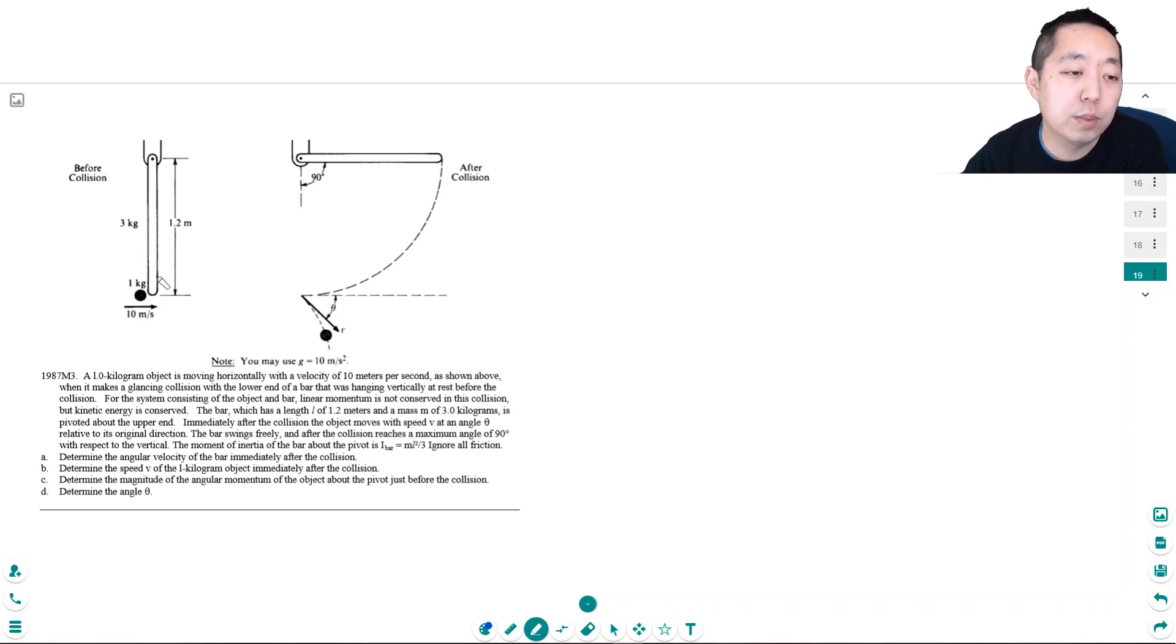The reason linear momentum is not conserved is there is an outside force from here that basically caused the linear momentum to not be conserved. Probably this normal force. FYI. But kinetic energy is conserved.